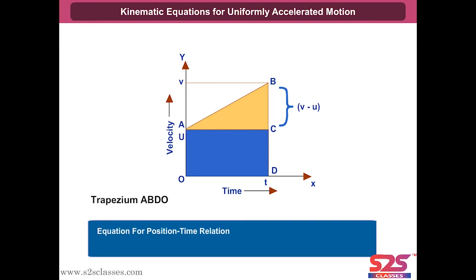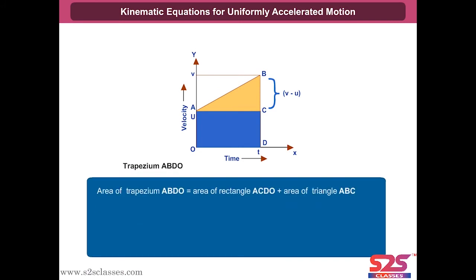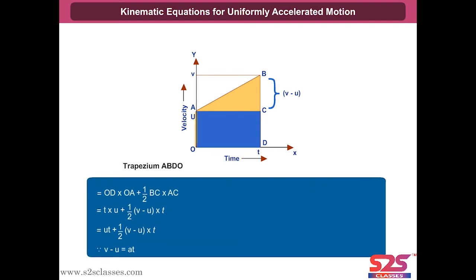Equation for position-time relation: let the distance traveled by an object be S in time T with acceleration A. The distance traveled is obtained by the enclosed area ABDO. Therefore, S equals the area of trapezium ABDO, which equals the area of rectangle ACDO plus the area of triangle ABC, giving S equals T times U plus half times V minus U times T, equal to UT plus half(V minus U)T. From the first equation, V minus U equals AT.